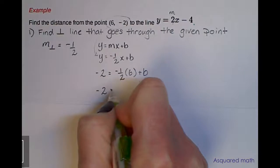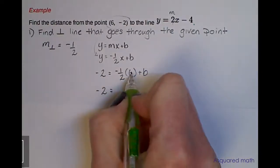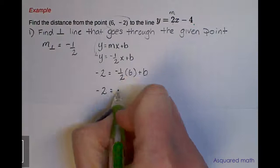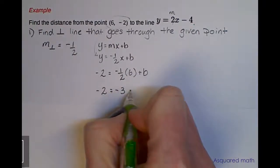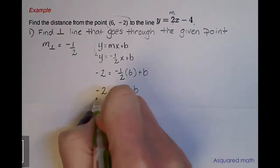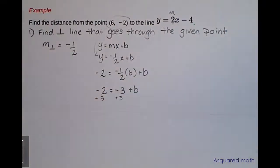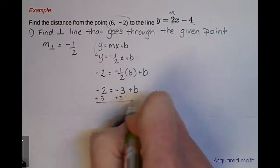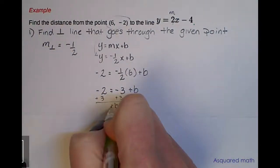Now we have to do our algebra. We have -2 = -3 + b because half of 6 is 3, and negative times positive gives us -3. We add 3 to both sides and we end up with b = 1.